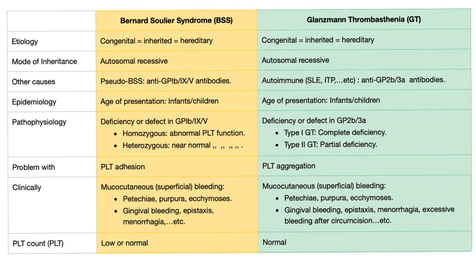Clinically, both present with mucocutaneous bleeding — petechiae, ecchymosis, gingival bleeding, epistaxis, menorrhagia, etc. Platelet count is low or normal in Bernard-Soulier, hence macrothrombocytopenia, but it is normal in Glanzmann's — neither macro nor thrombocytopenic.